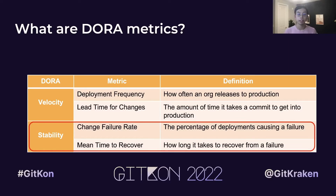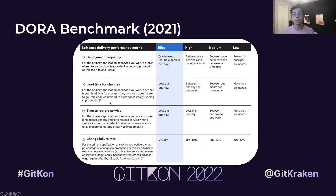Stability is measured by change failure rate and mean time to recover. That is the percentage of deployments causing a failure, and how long it takes your team to recover from a failure once it finds one. The DORA framework then categorizes teams into groups based on their scores on these metrics, ranging from low performers to elite. You can get a quick assessment of where you stand on the DORA metrics using the benchmark shown here or from the report.